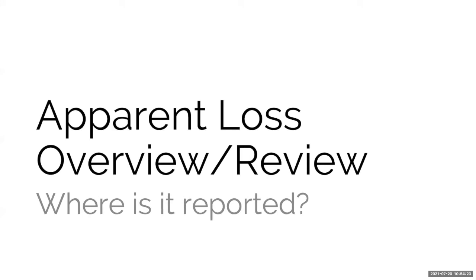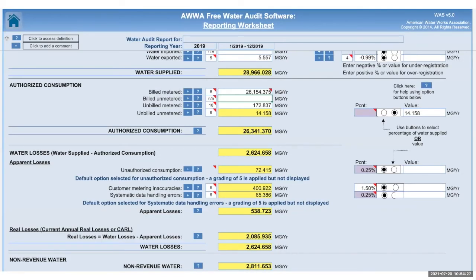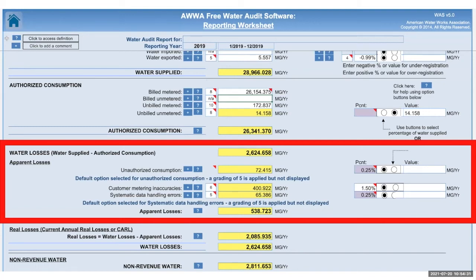Looking at where apparent losses appear in the audit — all water losses show up in the bottom section, grouped together: systematic data handling errors, customer metering inaccuracies, and unauthorized consumption. All those fields are yellow, meaning the audit calculates them using defaults. You can override them by changing percentages or checking a box to enter a volumetric calculation. Our poll showed a lot of folks are using the defaults, and that's perfectly okay as a starting point.